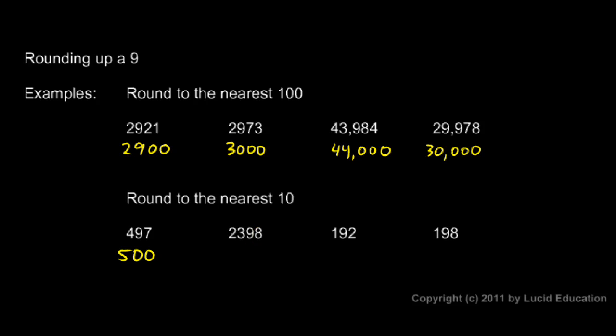So instead of 2398 to the nearest ten, it ends up being 2400. The next highest ten ended up also being an even hundred.